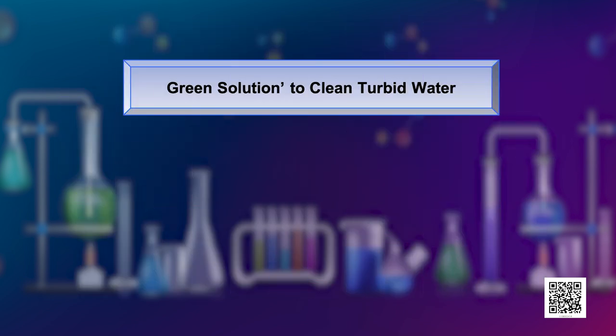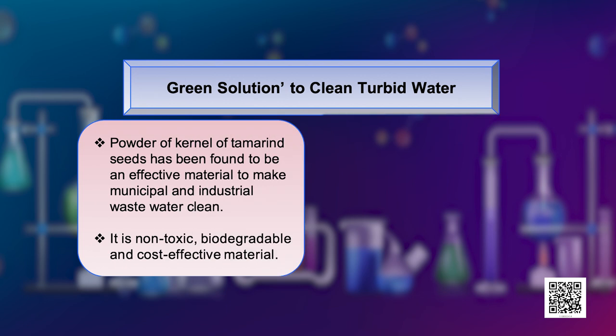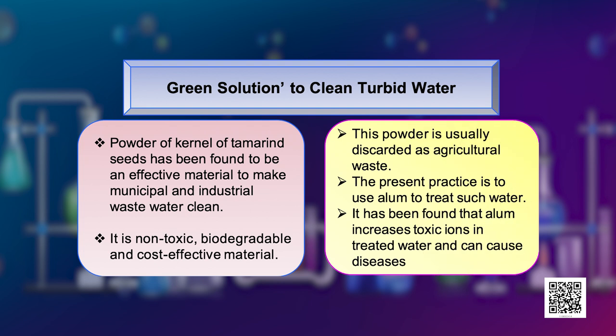The green solution to clean turbid water: powder of kernel of tamarind seeds has been found to be very effective as a material to make municipal and industrial waste water clean. It is non-toxic and biodegradable, and this powder is otherwise discarded as agricultural waste. The present practice is to use alum to treat such water. However, it has been found that alum also increases toxic ions in the treated water and can cause many diseases.